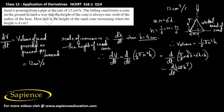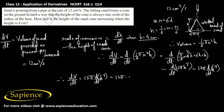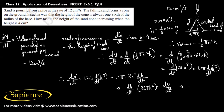Since 12π is a constant, it comes outside the differentiation. So dV/dt equals 12π · d/dt of h³, which equals 12π · 3h² · dh/dt. Therefore, dh/dt equals dV/dt divided by 36π h².